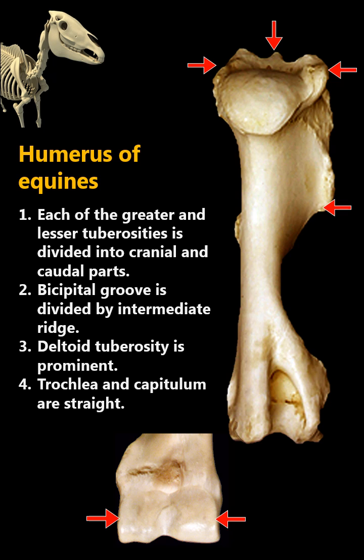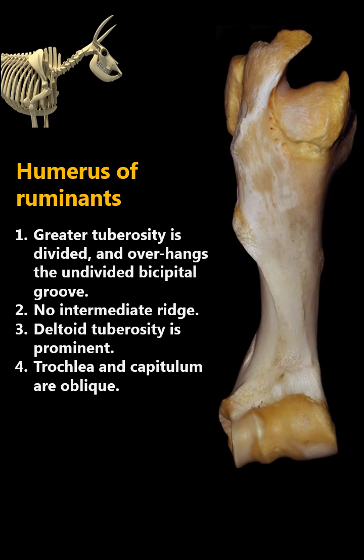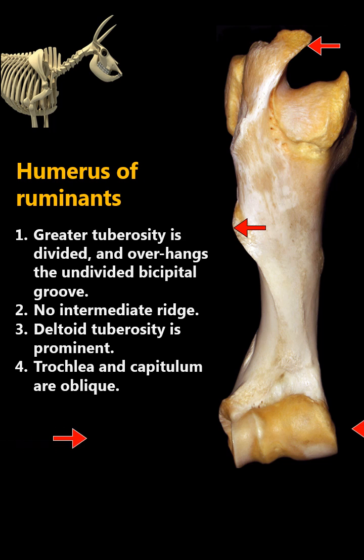While in ruminants, the greater tuberosity is divided and overhangs the intertubercular or bicipital groove, there is no intermediate ridge, the deltoid tuberosity is prominent, and the trochlea and capitulum are oblique.